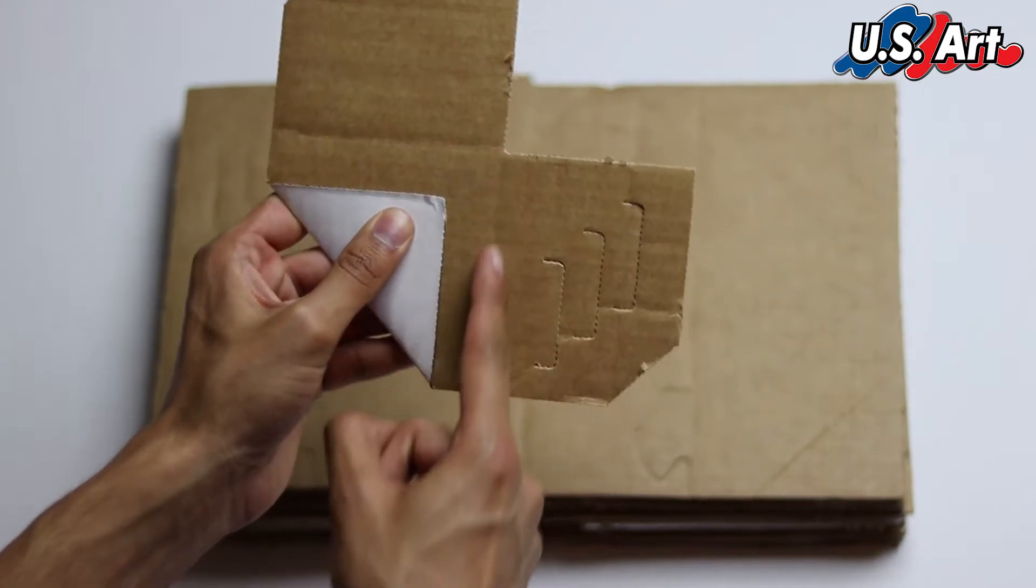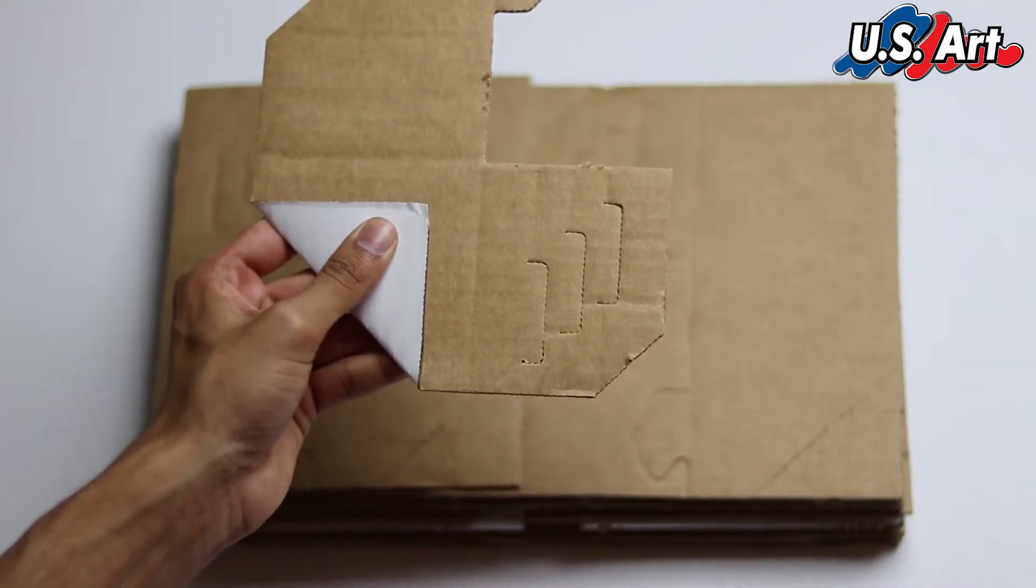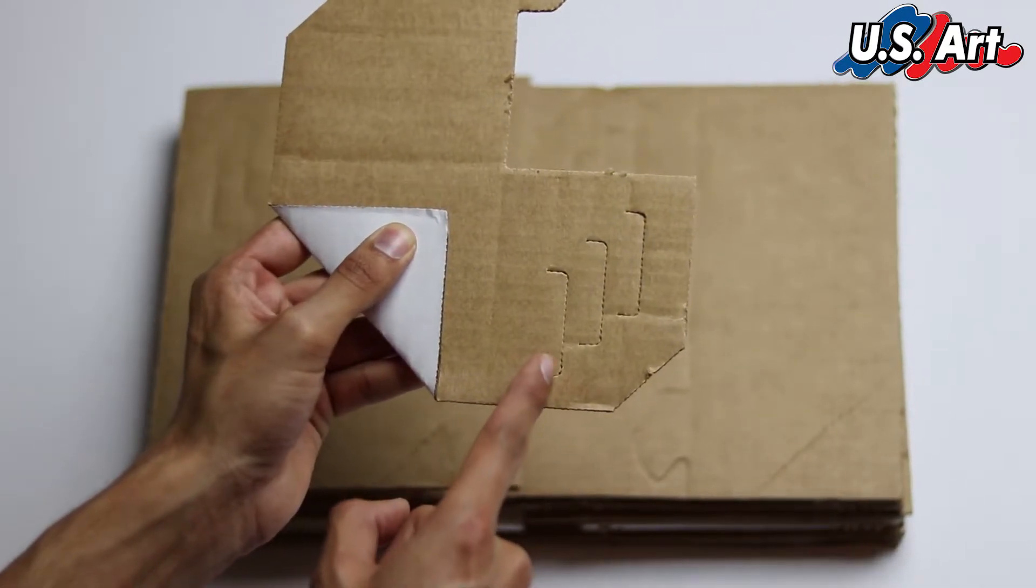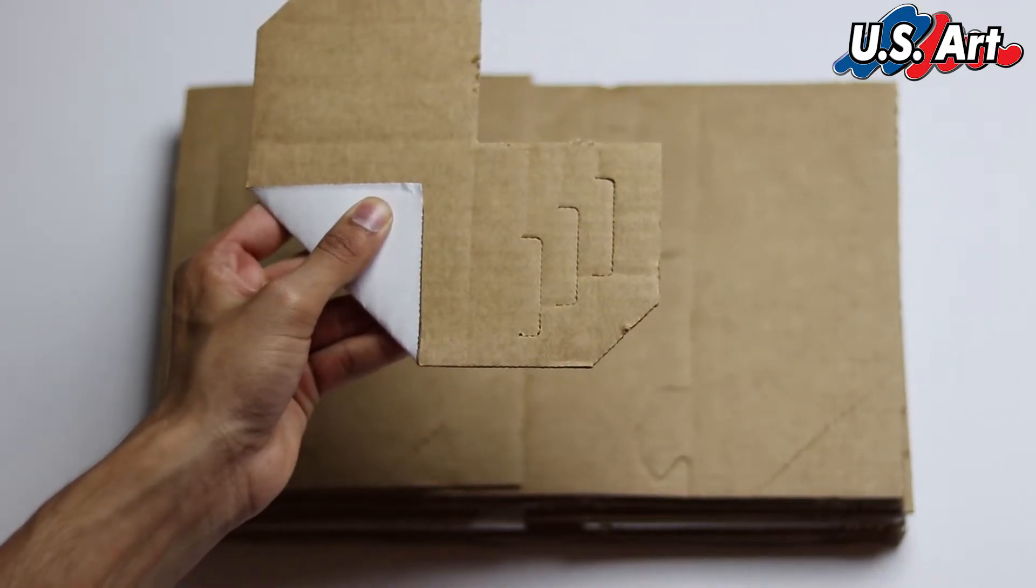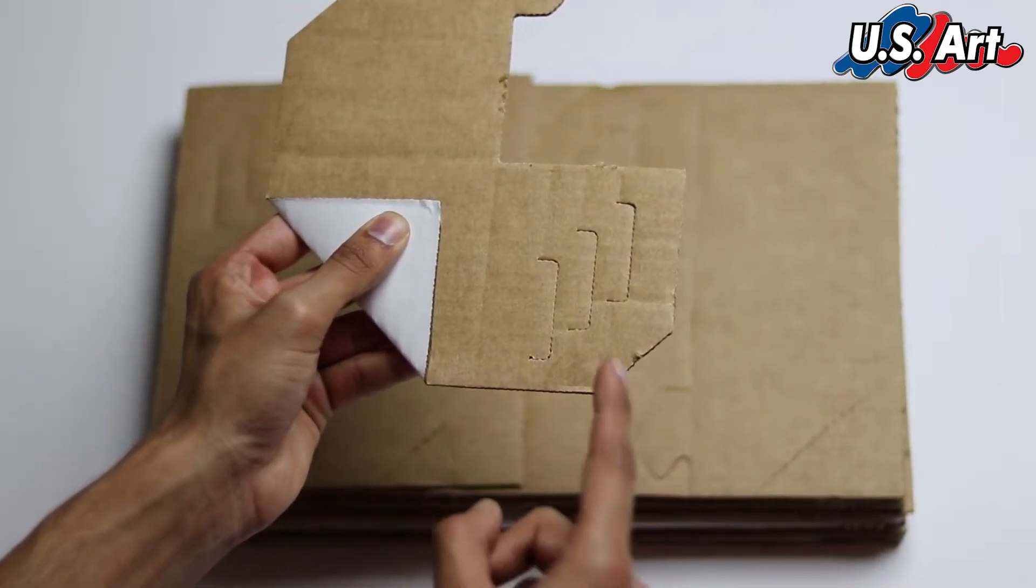And then you would want to fold this tab. Before you fold that tab, you would want to determine the thickness of your frame. So if it's a really thin frame, you would use the first tab. If it's like a medium thickness frame, you'd use the second one. And if it's a large thickness frame, you'd use the last one.